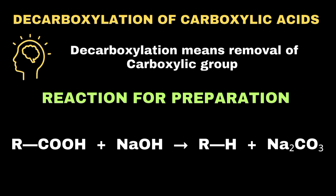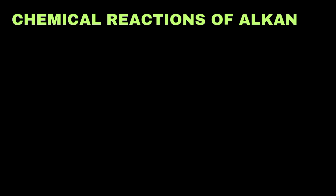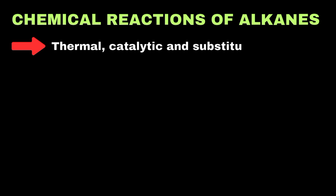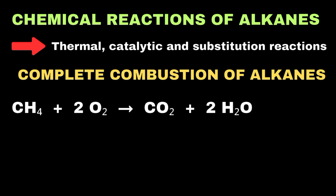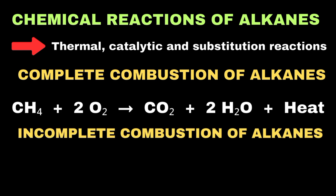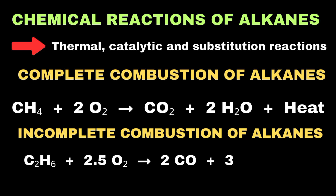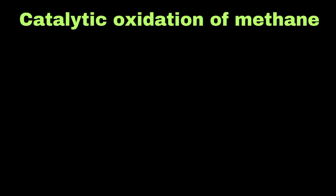Although alkanes are chemically inert, they can still undergo reactions such as thermal or catalytic reactions and substitution reactions. In complete combustion of methane, it produces carbon dioxide and two molar concentrations of water molecules. In incomplete combustion, it results in carbon monoxide and water. In catalytic oxidation, methane can change into formaldehyde and formic acid.